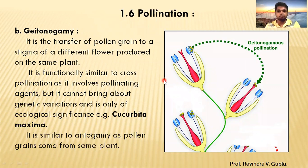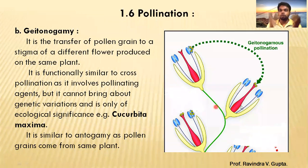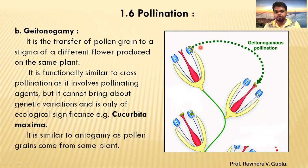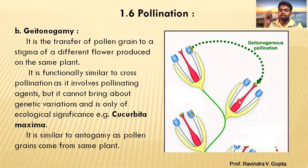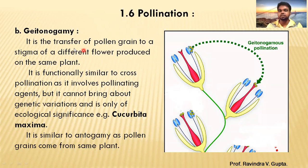In geitonogamy, we have one plant but there are many flowers on that plant. The pollen grain formed in the anther of one flower is transferred to the stigma of a different flower, but both flowers are on the same plant. This condition is called geitonogamy.